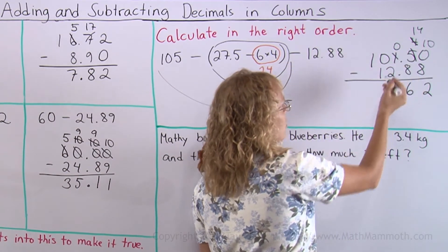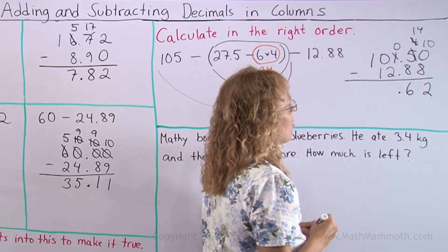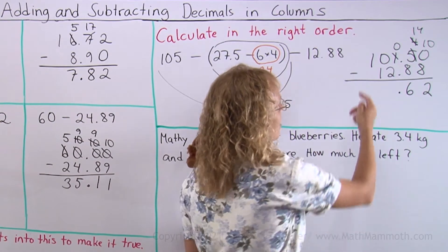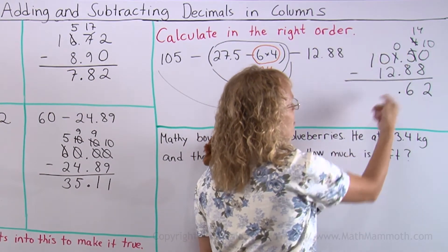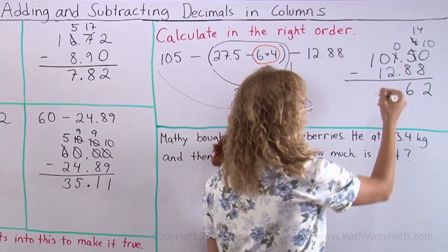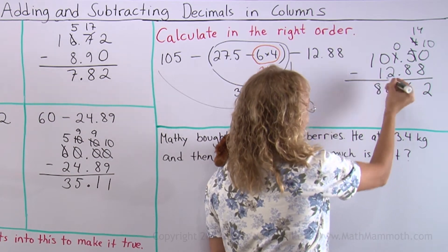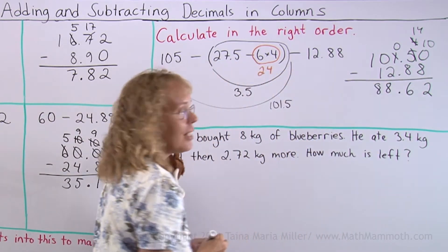Then 0 minus 2. I could continue regrouping, but I can just think of this as the whole number 100 minus 12. 100 minus 12 is 88. Quicker. So that's our final answer, 88.62.